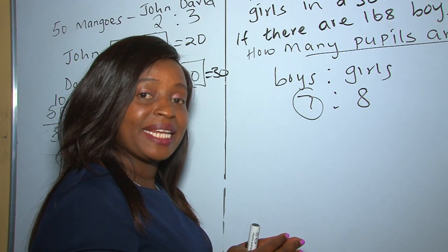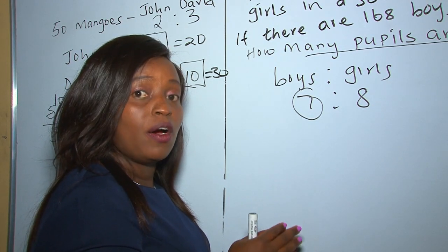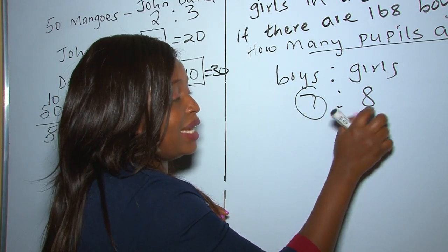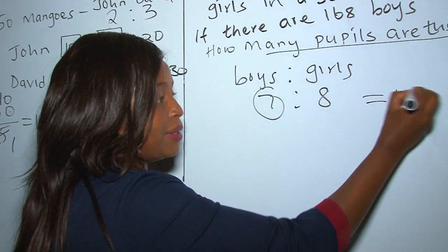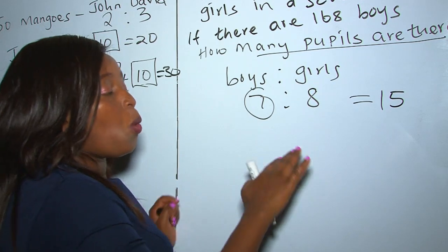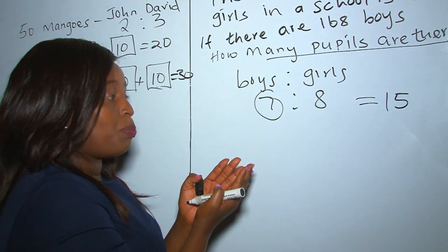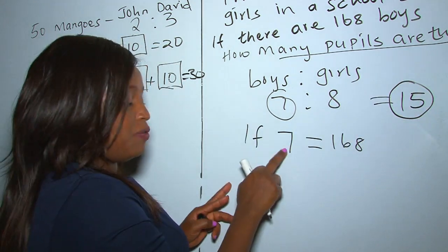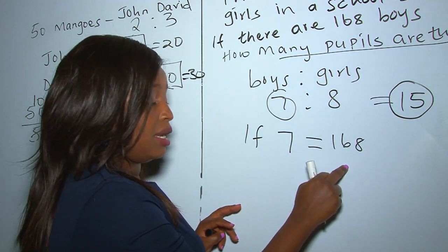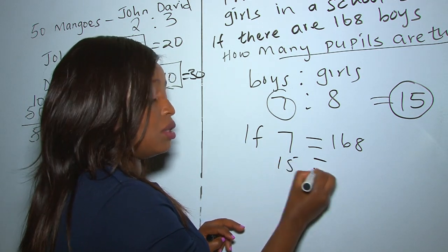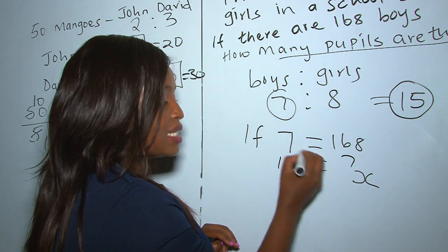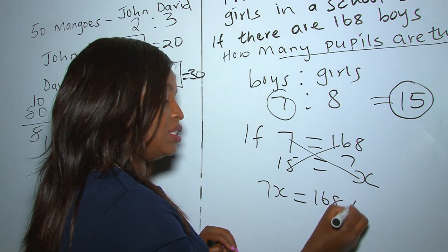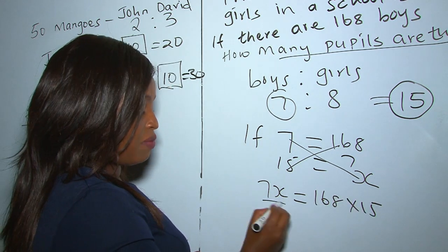We get the total ratio: 7 plus 8 equals 15. We are looking for all the pupils, and in terms of ratio there were 15 parts in total. So if 7 is equal to 168, what is 15 equal to? Whatever we don't know we call x.